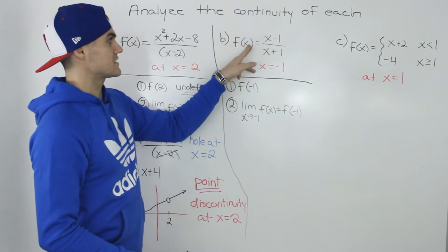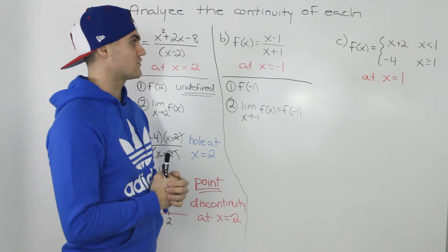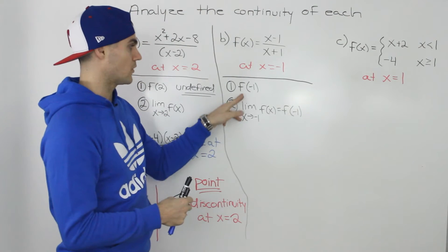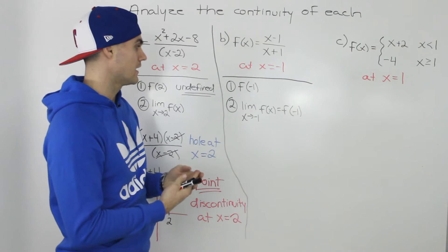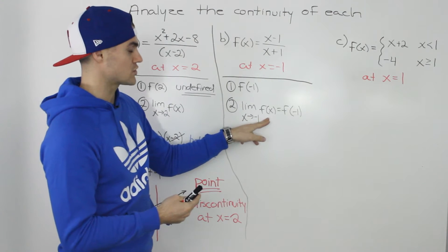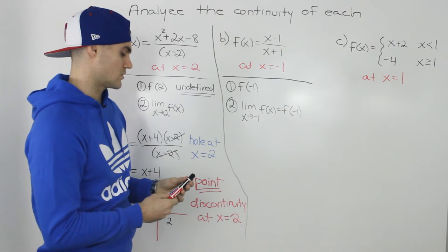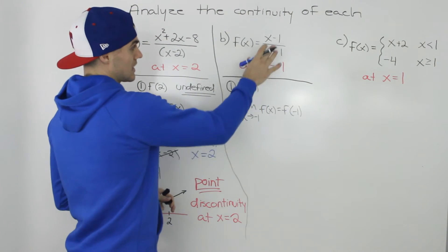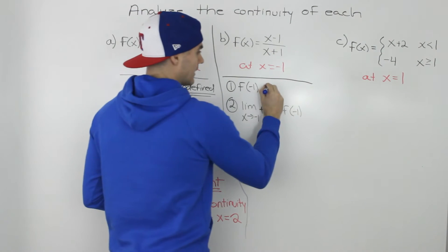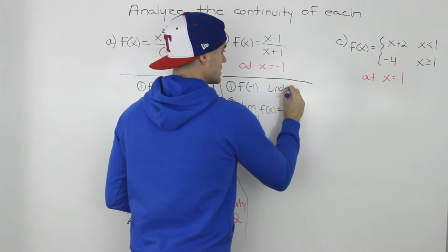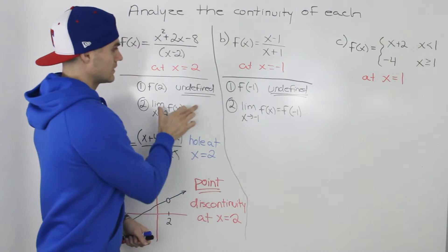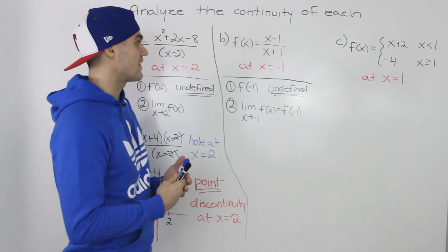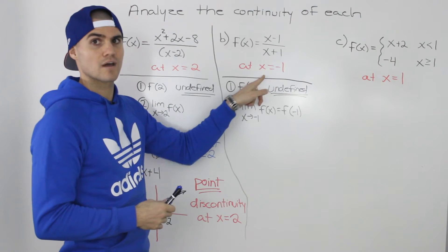Moving on to the next example: f of x equals x minus 1 over x plus 1, and we have to figure out whether the function is continuous at x equals negative 1. We need to prove two conditions: number one, f of negative 1 has to be defined, and number two, the limit as x approaches negative 1 of the function has to equal that f of negative 1 value. If we plug in negative 1, the denominator is 0, so f of negative 1 is undefined. The first condition fails, so the function is discontinuous at x equals negative 1.